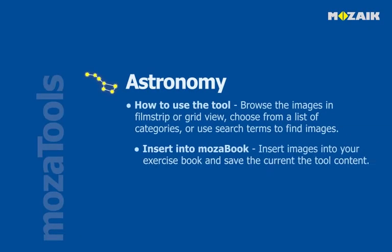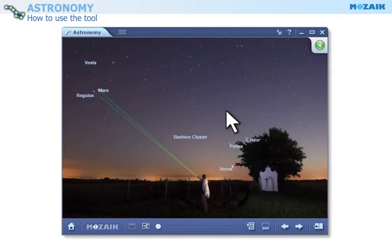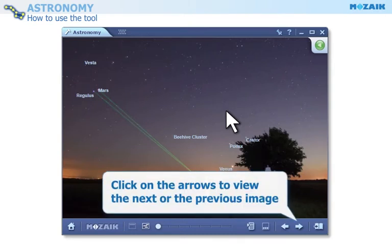Welcome to the astronomy tool. You can browse images in filmstrip or grid view, choose from a list of categories, or use search terms to find images. You can also insert images into your exercise book and save the current tool content. Let's find out how to use the astronomy tool.